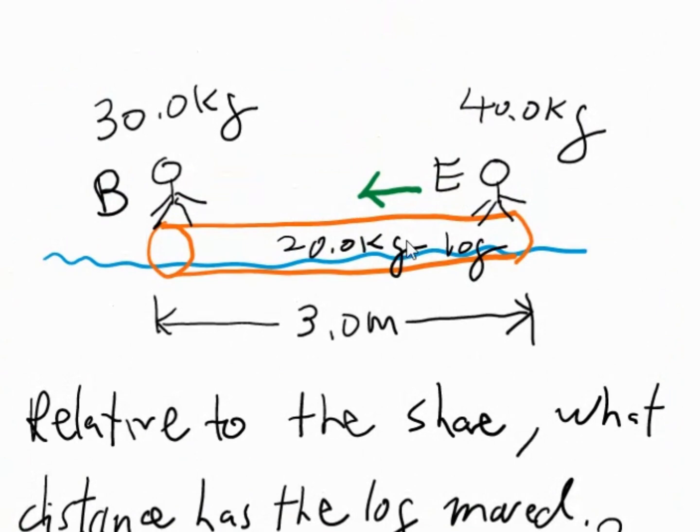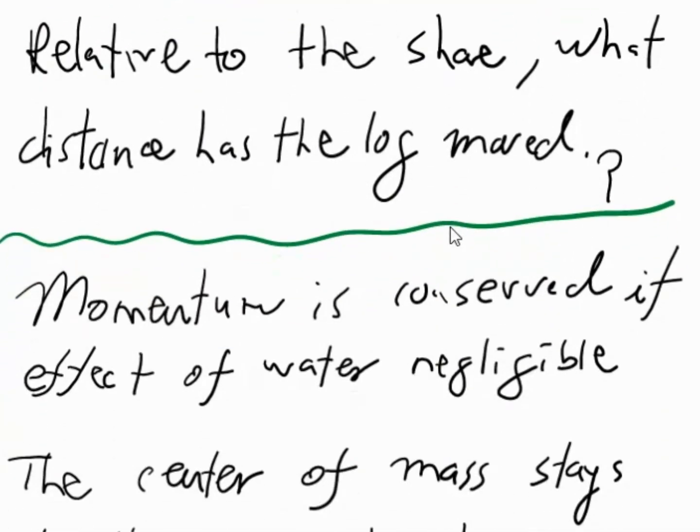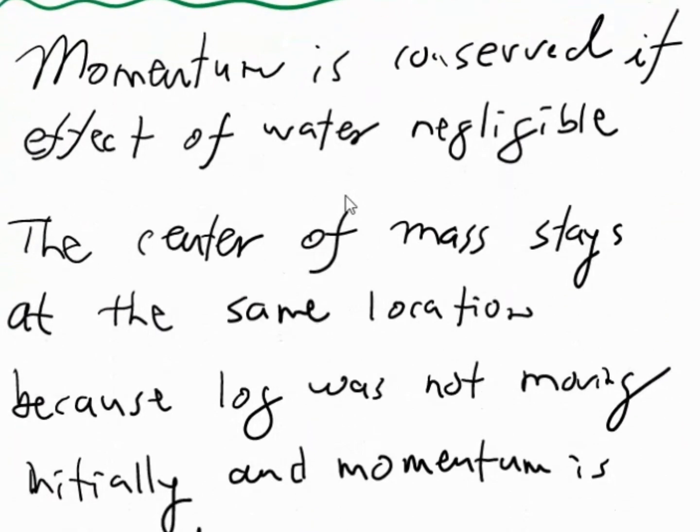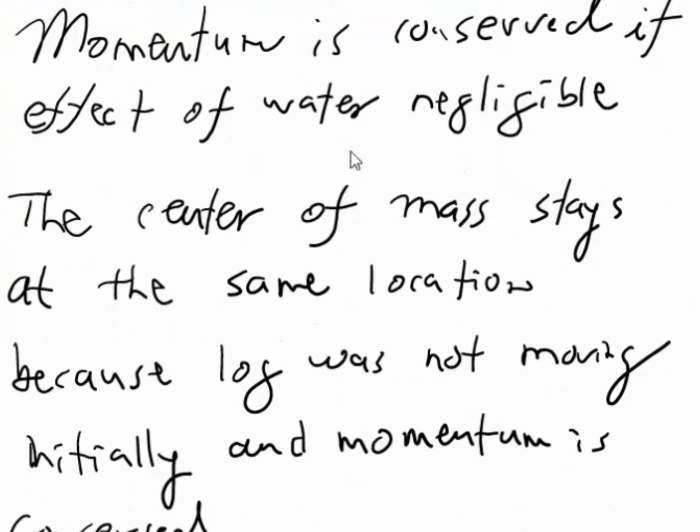So we want to determine how much has the log moved relative to someone on the shore. So momentum is conserved if the effect of the water is negligible, meaning that the external force in the direction of motion is negligible.